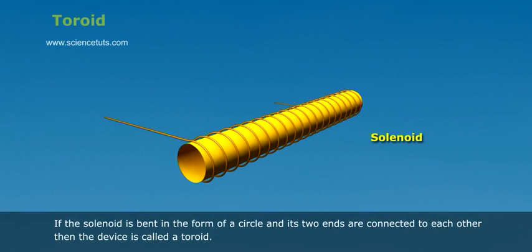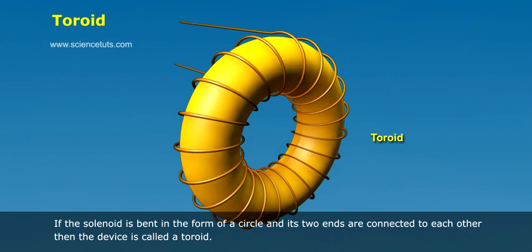Toroid. If the solenoid is bent in the form of a circle and its two ends are connected to each other, then the device is called a toroid.